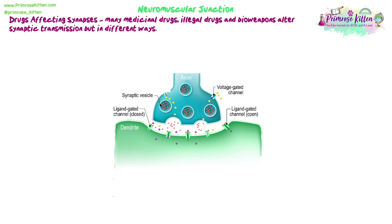Now we're going to look at drugs — many medicinal drugs, illegal drugs, and also bioweapons used in various wars or terrorist attacks that can alter synaptic transmission in different ways. You won't have to memorize the name of every drug or poison, but you need to be aware they exist and think about the knock-on effects of what happens if they block part of the synapse or neuromuscular junction — being able to predict or analyze why a drug might have a certain effect based on what part is affected.